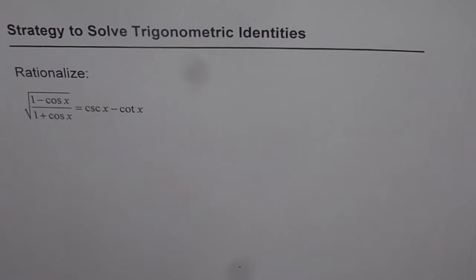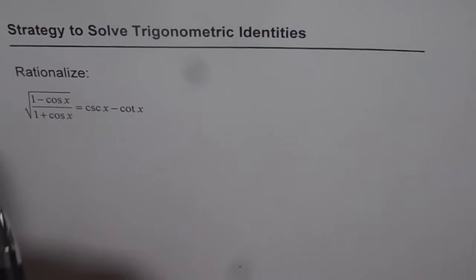Here is an excellent technique to solve difficult trigonometric identities. If you have an identity as given here, which is square root of (1 minus cos x) over (1 plus cos x) equals cosecant x minus cotangent x,